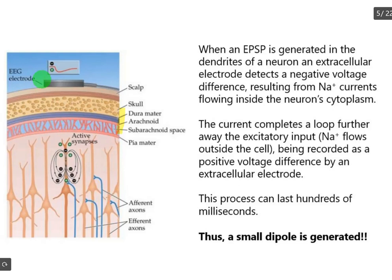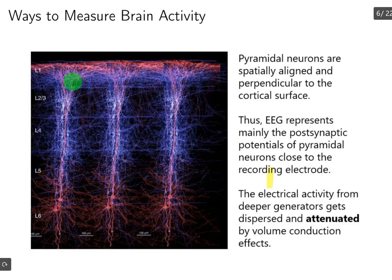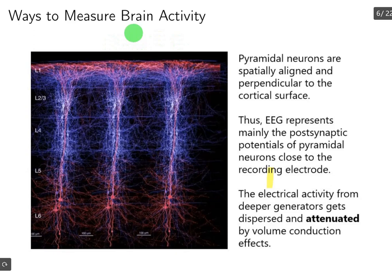If you look at the microscopic image of pyramidal neurons, the brain surface cortex has a layered structure — layers one through six, where six is the deepest layer from the cortex surface. Most of the EEG activity is recorded from layer one. These pyramidal neurons are spatially aligned and perpendicular to the cortical surface. The EEG data represents mainly the post-synaptic potentials of pyramidal neurons closer to the cortex surface and the recording electrode, while activities of deeper neurons get dispersed and attenuated by the volume conduction effect.